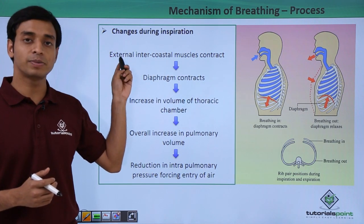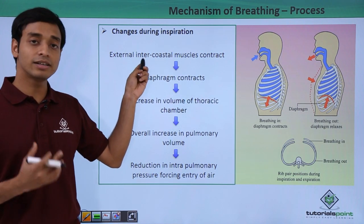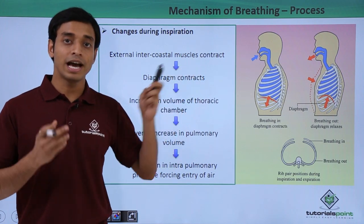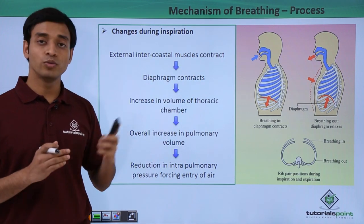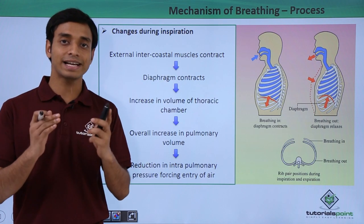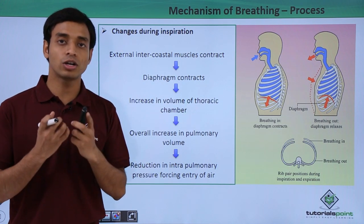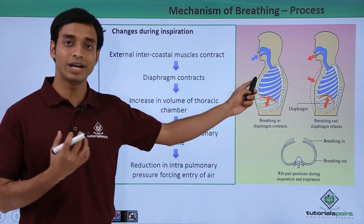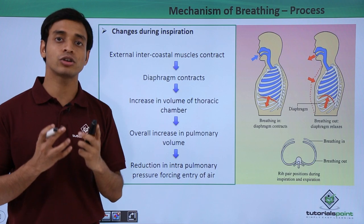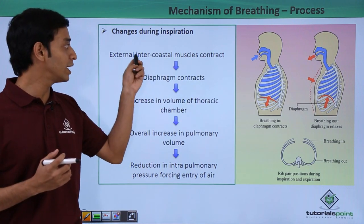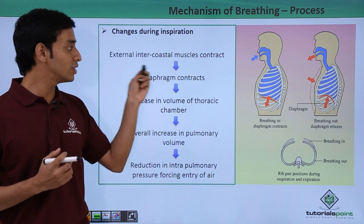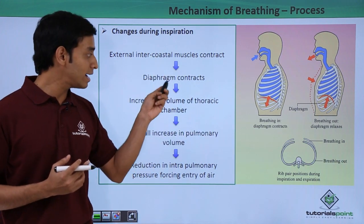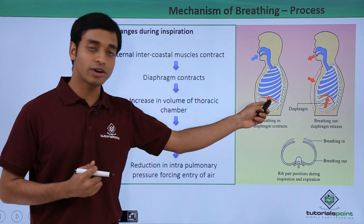During the process of inspiration, the external intercostal muscles start contracting. Along with this, the diaphragm, which is usually in a relaxed dome shape, contracts and becomes flattened. Here you can see the intercostal muscles have pushed outside due to muscular contraction, causing the ribs to push outwards.